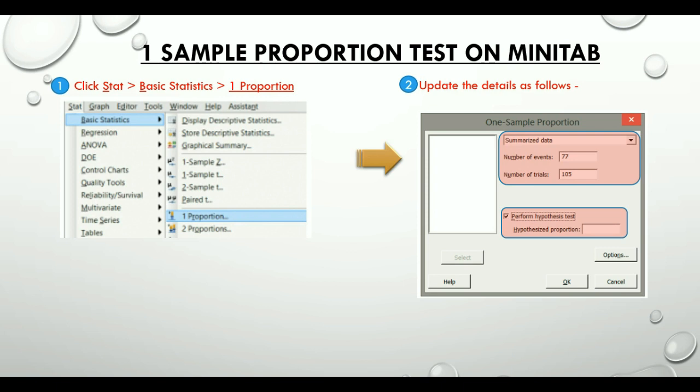One important point to note here is that we can also click on options and select the normal approximation method. However, it is advisable to go for the exact method or the binomial method, as this method is more accurate and powerful than the normal approximation method.